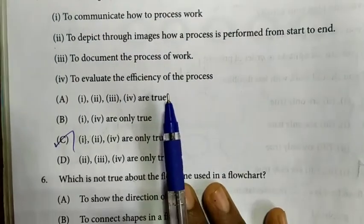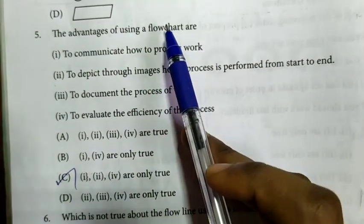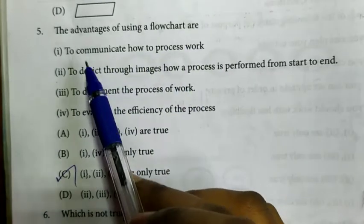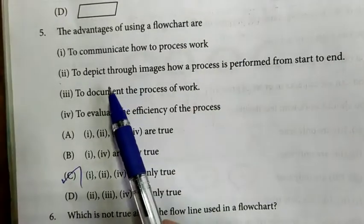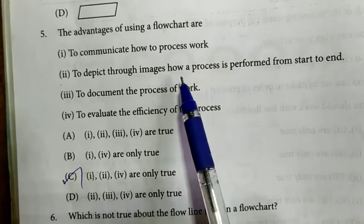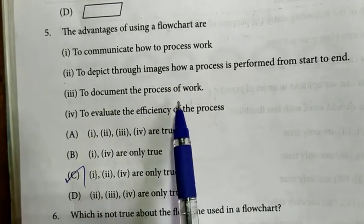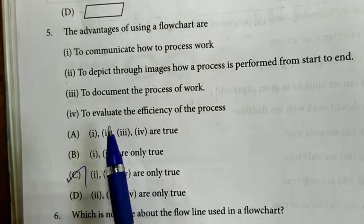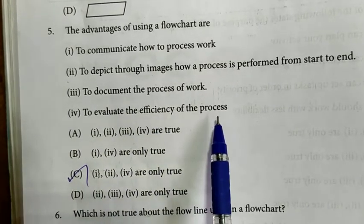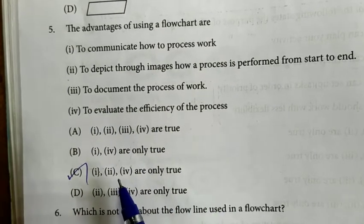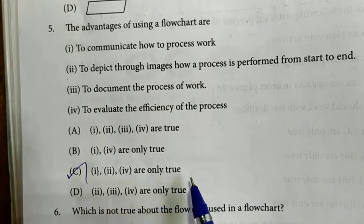Fifth question: The advantages of using a flowchart are: first, to communicate how to process work, second, to depict through images how a process is performed from start to end, third to document the process of work, fourth to evaluate the efficiency of the process. Answer is option C: 1, 2, 4 are only true.